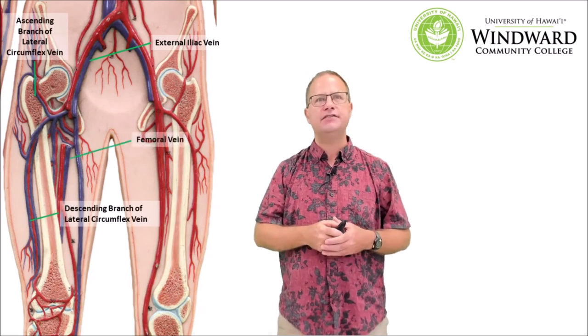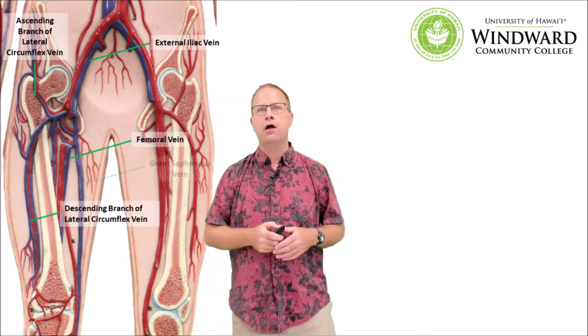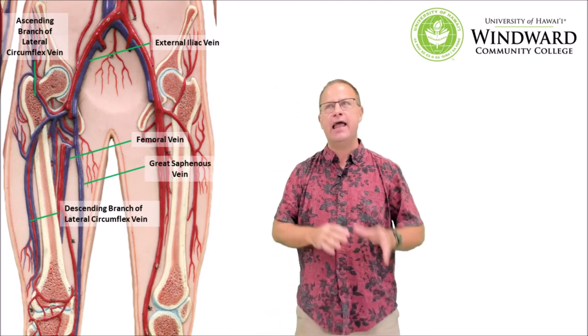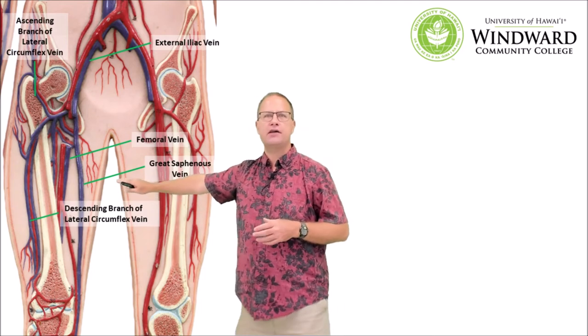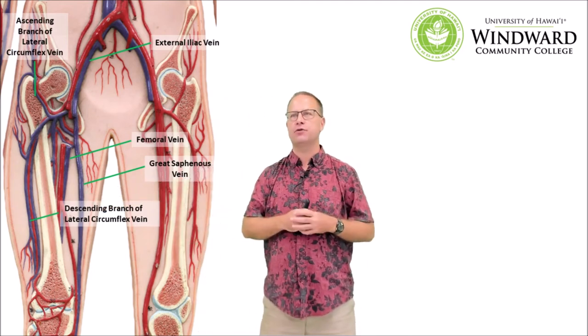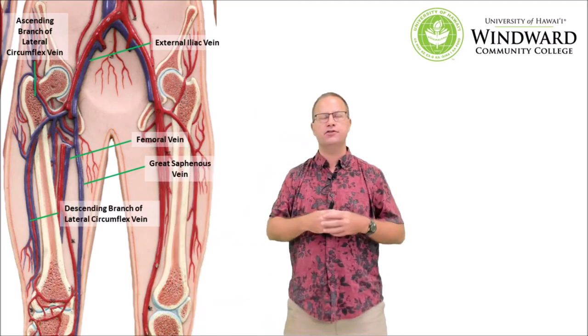The veins of the hip and thigh are very similar to the arteries in location and name. Starting with the external iliac vein, we have the ascending and descending branches of the lateral circumflex veins, then the femoral vein — the major vein of the thigh. We also have the great saphenous vein, a very superficial vein on the inside of the thigh, located close to the surface. This is a blood vessel we actually harvest in cardiac bypass grafts, taking a section of it to go around an occluded vessel and restore blood flow to the heart.